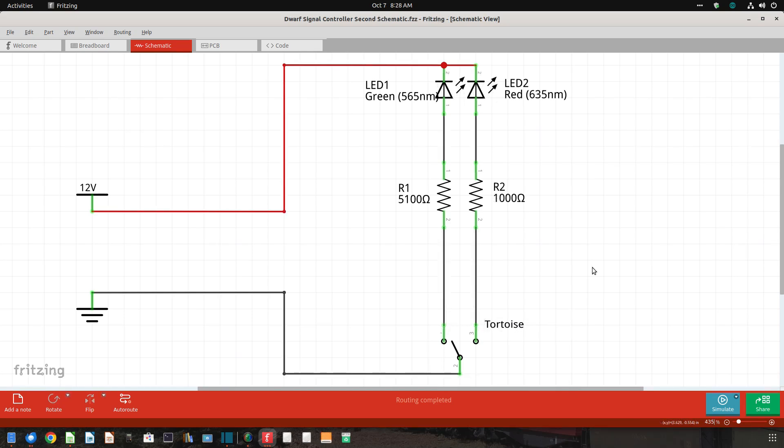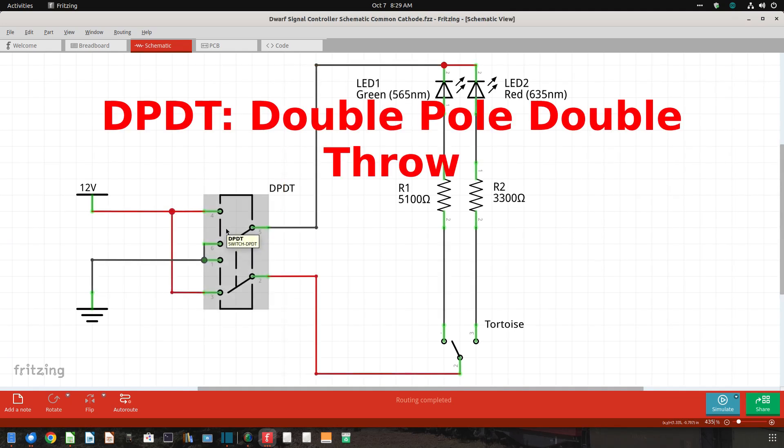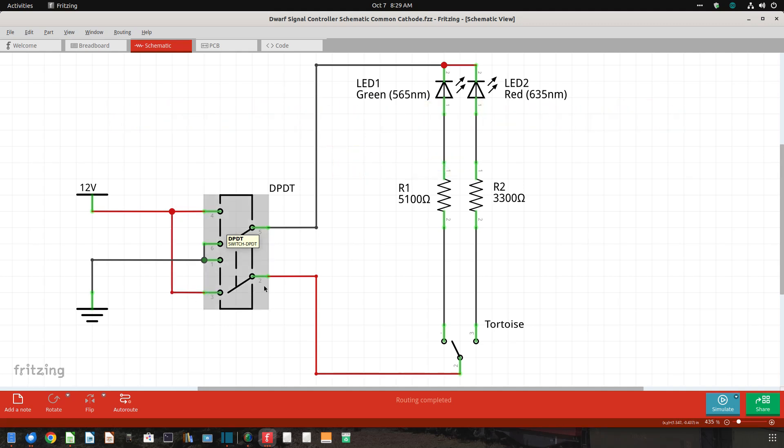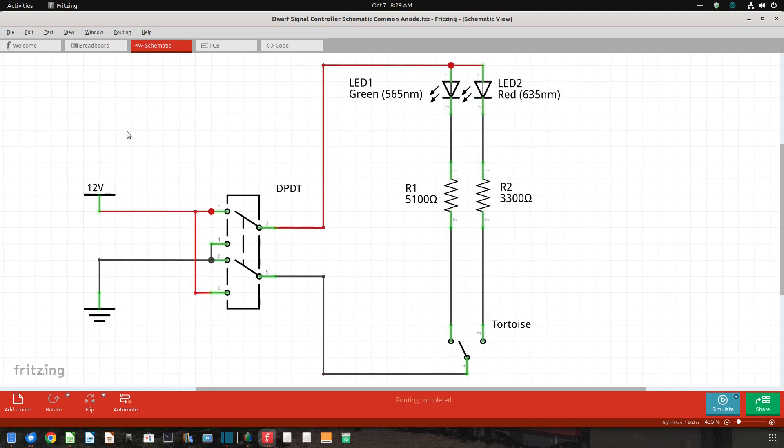If the LEDs are flipped so the cathodes are at the top of the schematic, you can see that no current will flow. Therefore, I add a DPDT switch to reverse the polarity of the current to the device. In one position, it connects the common LED leads to the ground, and it connects the switch machine common to positive voltage. In the other position, the switch provides positive voltage to the common LED leads, and connects the common switch machine to ground.